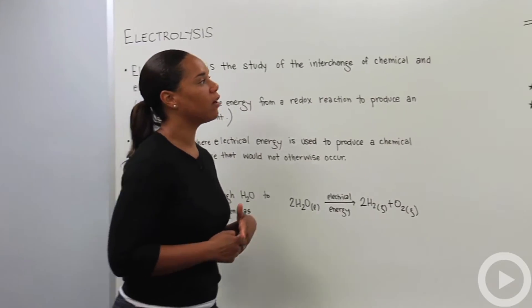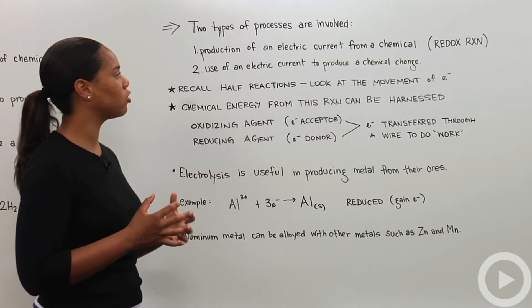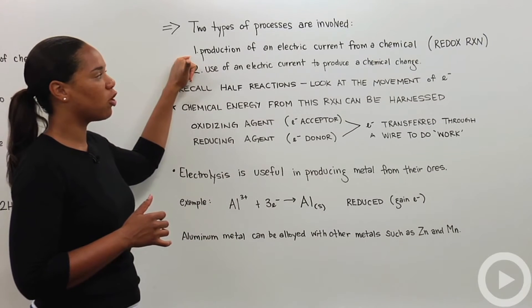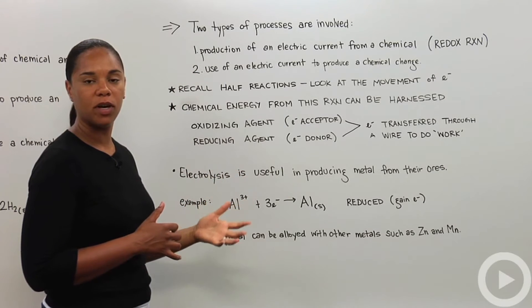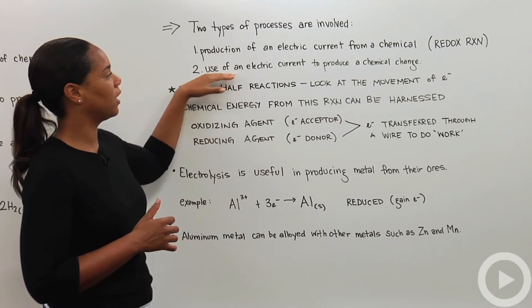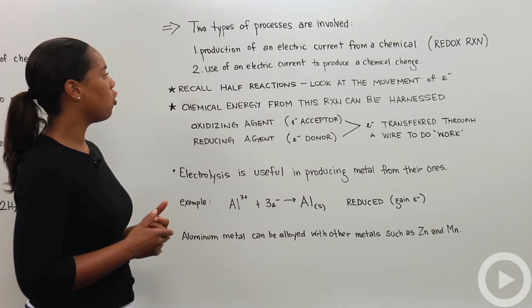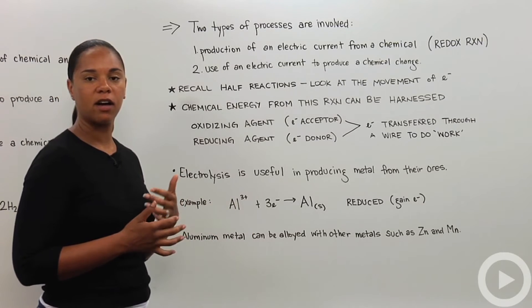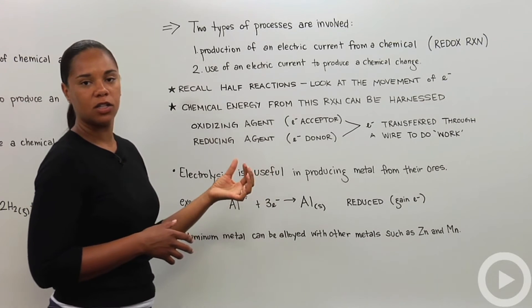There are two types of processes involved in this electrolysis process. The first is production of an electric current from a chemical, and that's done by inducing a redox reaction. The second is to use that electric current to actually produce a chemical change.